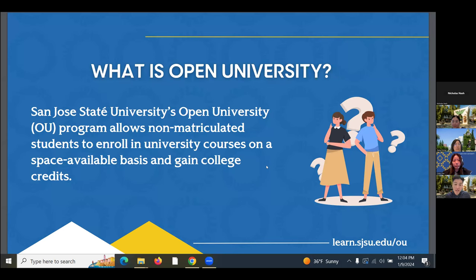So what is Open University? San Jose State University allows non-SJSU students to take regular classes for college credit without being accepted. Whether you're a high school student, another college student, or anyone in the community, you can experience SJSU college life through Open University. Also, if you are a disqualified student, this is the best way to get back to your own program.